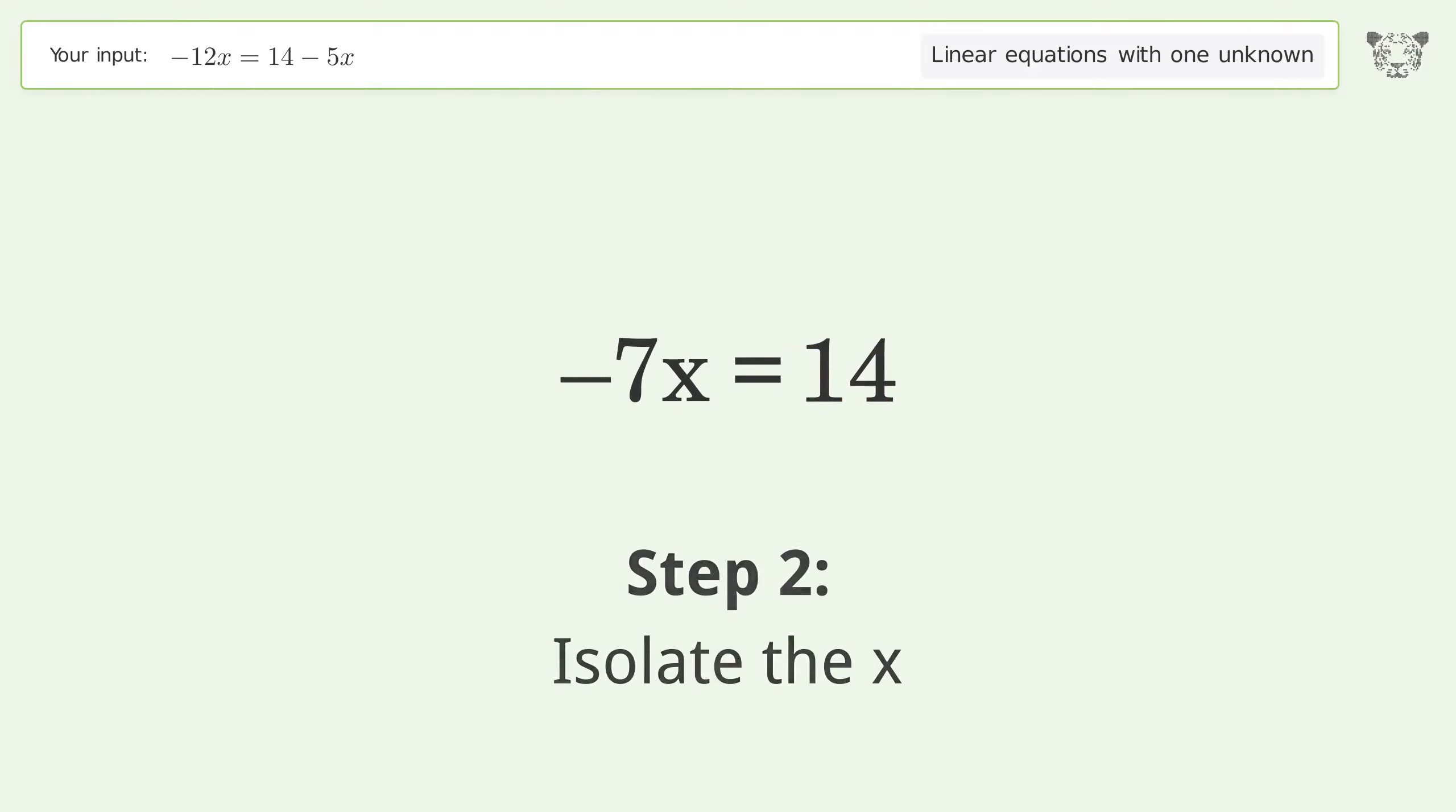Isolate the x. Divide both sides by negative 7. Cancel out the negatives.